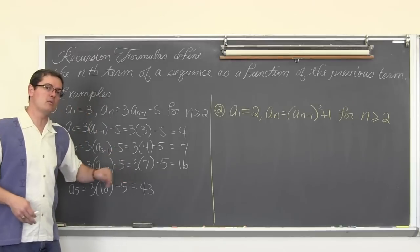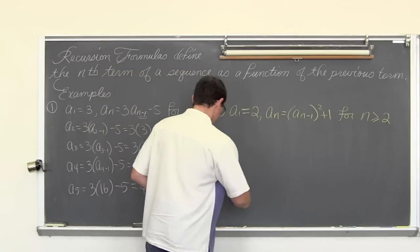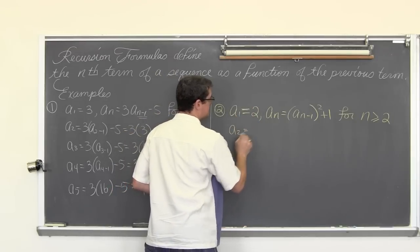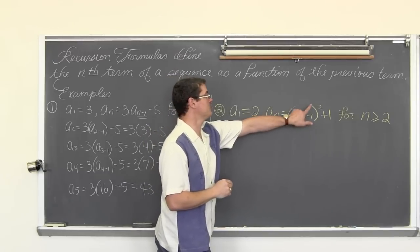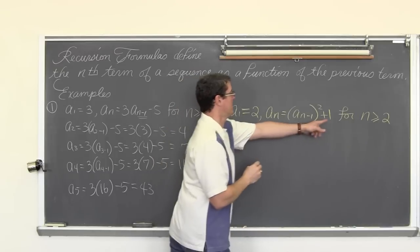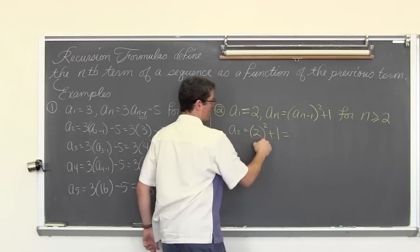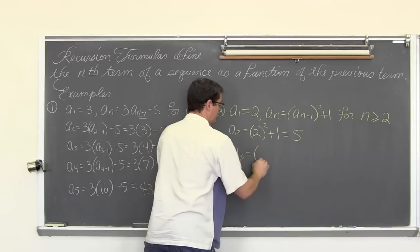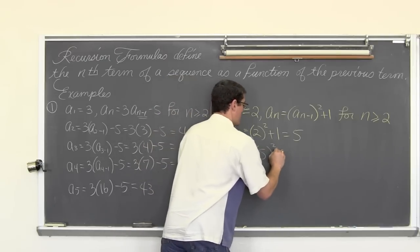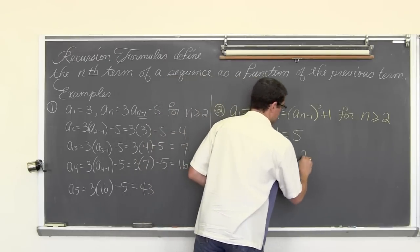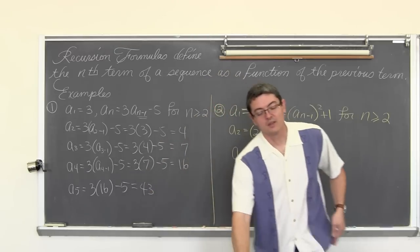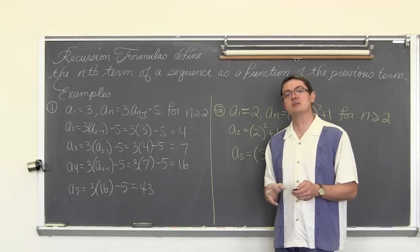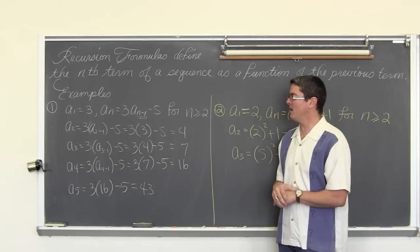One more example: a sub 1 equals 2, and a sub n equals a sub n minus 1 squared plus 1. So a sub 2 equals 2 squared plus 1 equals 4 plus 1 equals 5. a sub 3 equals 5 squared plus 1 equals 25 plus 1 equals 26, and so on. That is your introduction to sequences. The next video is going to be about summation notation, how to use it, what it does, and some factorial symbols.